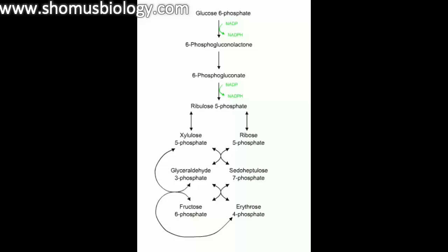The pentose phosphate pathway, sometimes also called the hexose monophosphate pathway or hexose monophosphate shunt, is a route the cell uses to make NADPH, which is an important molecule for biosynthetic reactions and for reducing oxidative damage inside the cell. That is the major importance of the pentose phosphate pathway — to produce a lot of NADPH, which those anabolic reactions inside the cell demand.